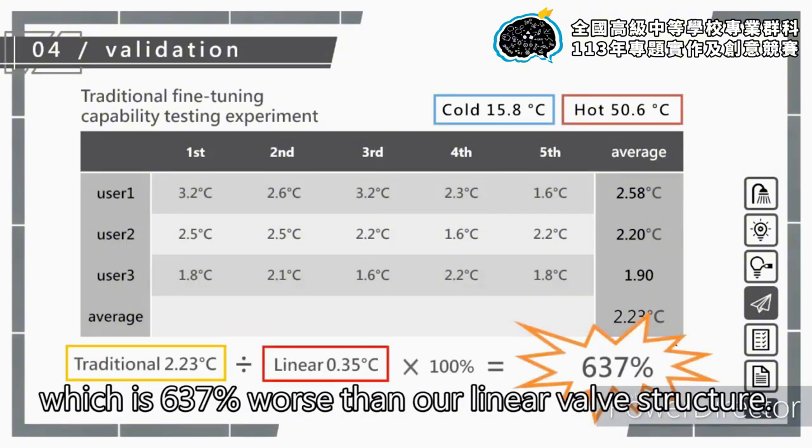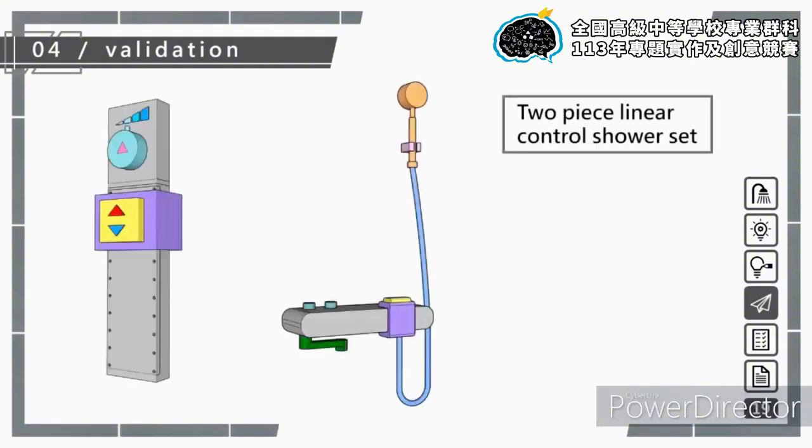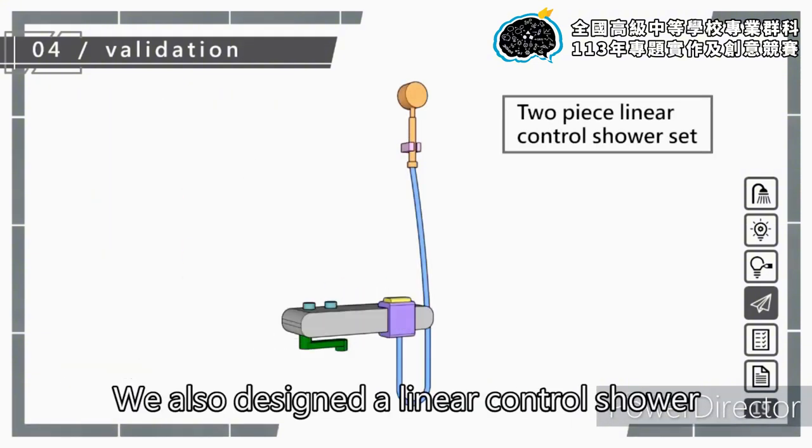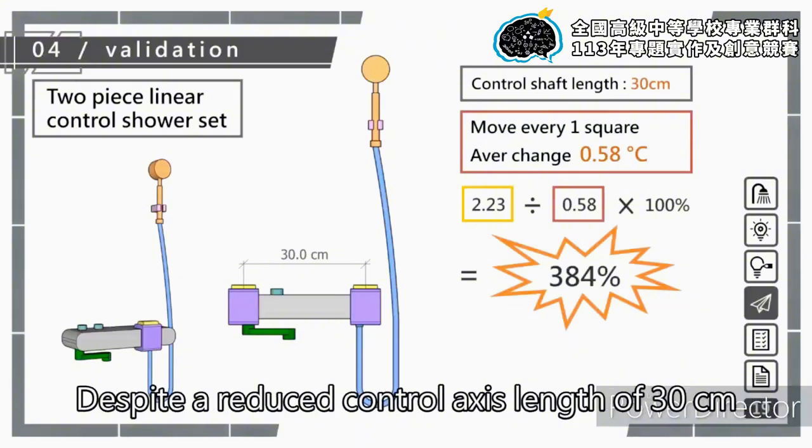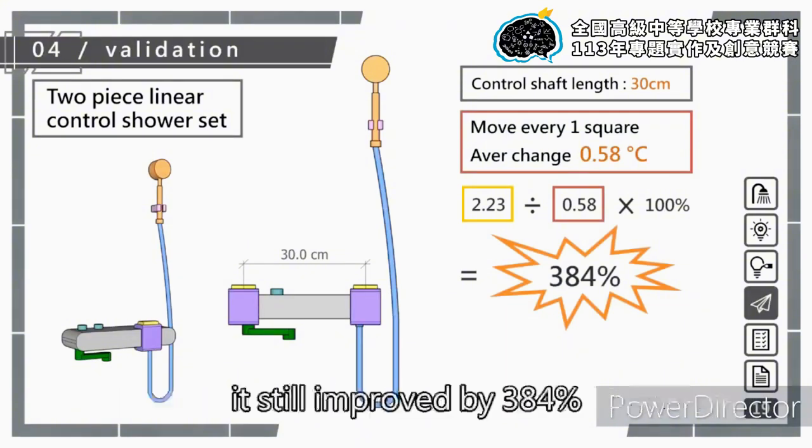We also designed a linear control shower set for the more commonly used two-piece systems. Despite a reduced control axis length of 30 cm, it still improved by 384 percent compared to traditional systems, maintaining a significant lead.